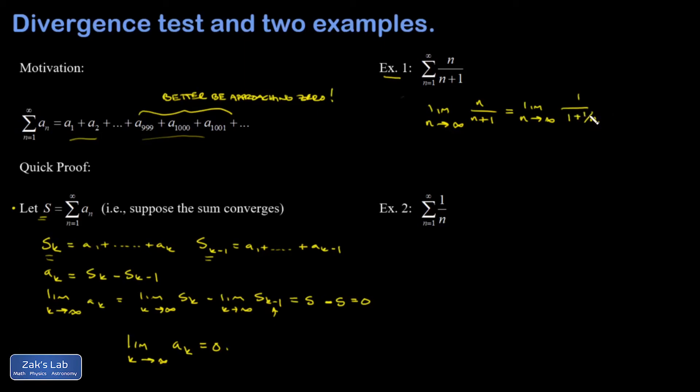And then I say this part, the one over n, is unambiguously going to zero, and so I get one out of this limit. So I just found out that when n gets large, these terms are approaching one. In other words, it's like adding one plus one plus one plus one infinitely many times, and my sum is going to diverge.